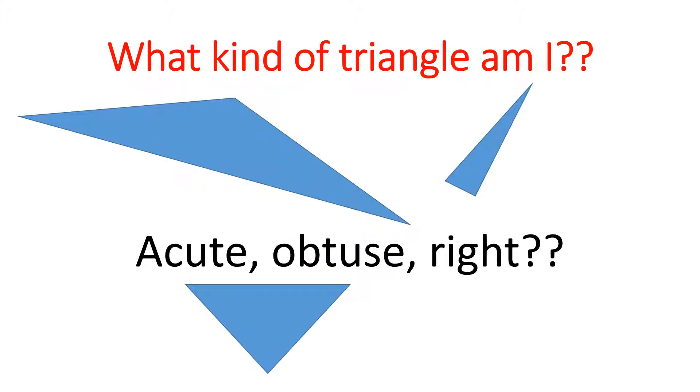Our goal of the day is to figure out what kind of triangles we're working with. We have three types of triangles: acute, which means less than 90 degrees; obtuse, which means greater than 90 degrees; and right, which means equals 90 degrees. Today we're going to use the Pythagorean Theorem to help us determine what type of triangle we are dealing with.